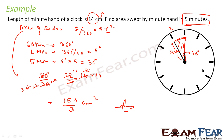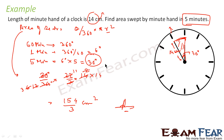Very simple. We observed that the clock rotates and in five minutes it covers 30 degrees — that is the key thing to find in this question. We found it because in 60 minutes it covers 360 degrees, so in one minute it is 6 degrees, and in five minutes it is 30 degrees.